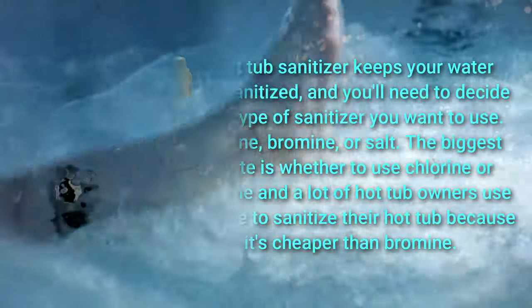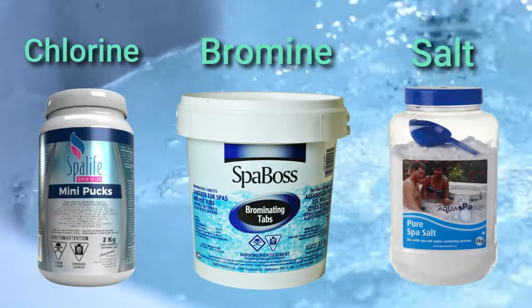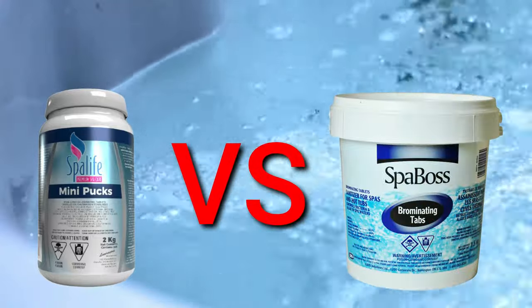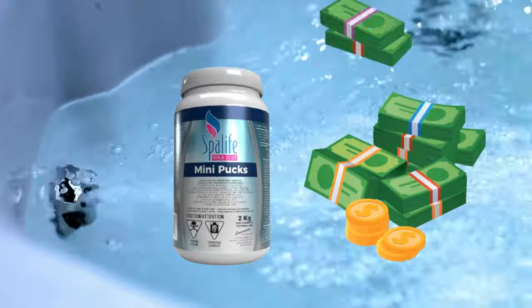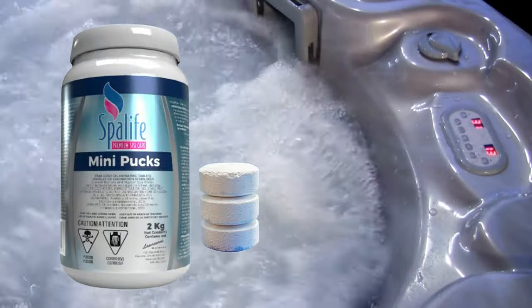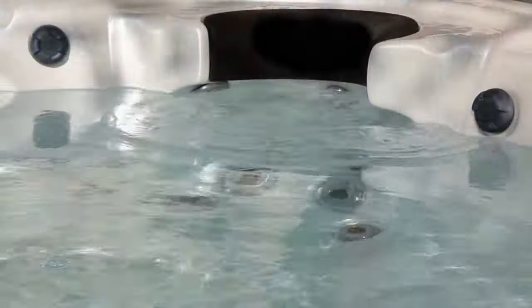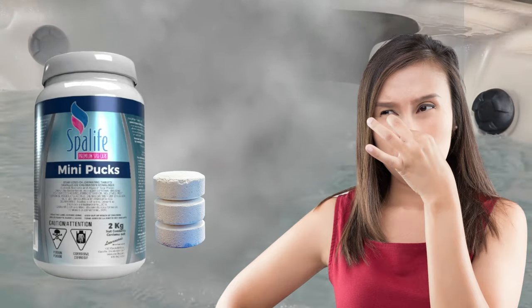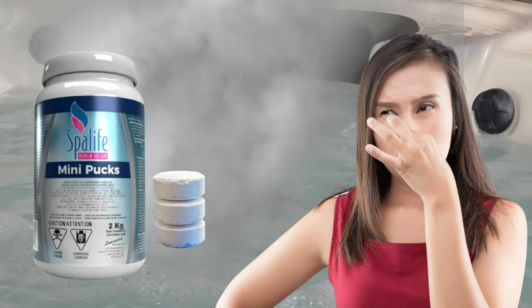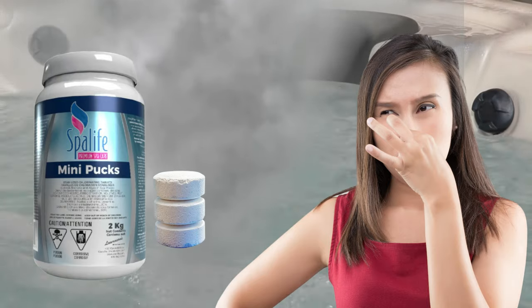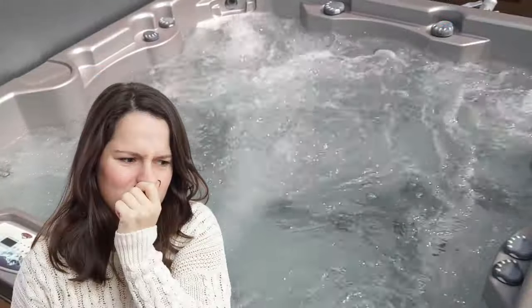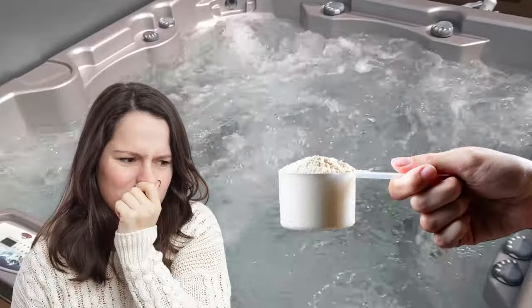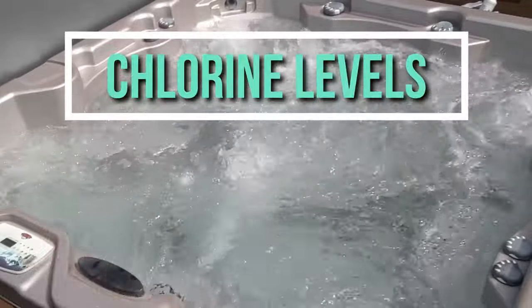The second chemical you will need is a hot tub sanitizer. A hot tub sanitizer keeps your water well sanitized, and you'll need to decide what type of sanitizer you want to use: chlorine, bromine, or salt. Many hot tub owners use chlorine because it's cheaper than bromine — it's easy to add and manage, and it's aggressive against bacteria and algae. One downside is the smell: chlorine kills contaminants by oxidizing, and as this reaction occurs it gives off waste products called chloramines. If you can smell chlorine, it probably means your chlorine has been used up and you need to add more. The ideal chlorine level is 1 to 3 parts per million.